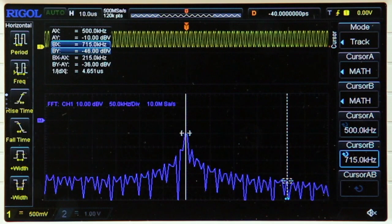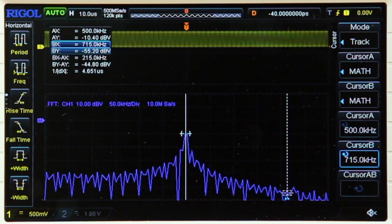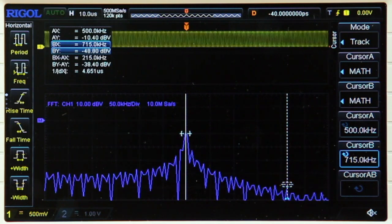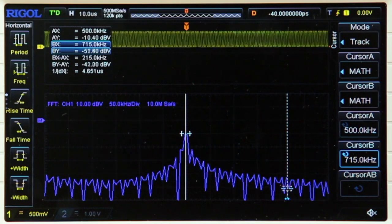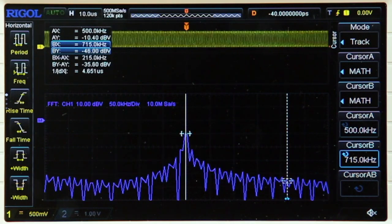The instrument also features a 16,000 point FFT function, which can be used with the instrument's cursor function to allow you to easily analyze signals in the frequency domain.